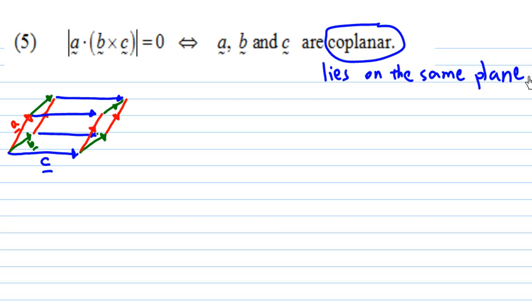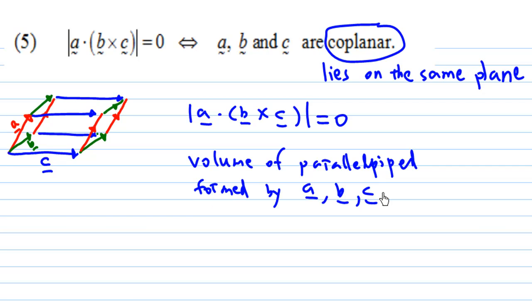Absolute value of A dot B cross C is the volume of the parallelepiped. So A dot B cross C, suppose this is equal to zero, means the volume of parallelepiped formed by A, B, C is equal to zero.